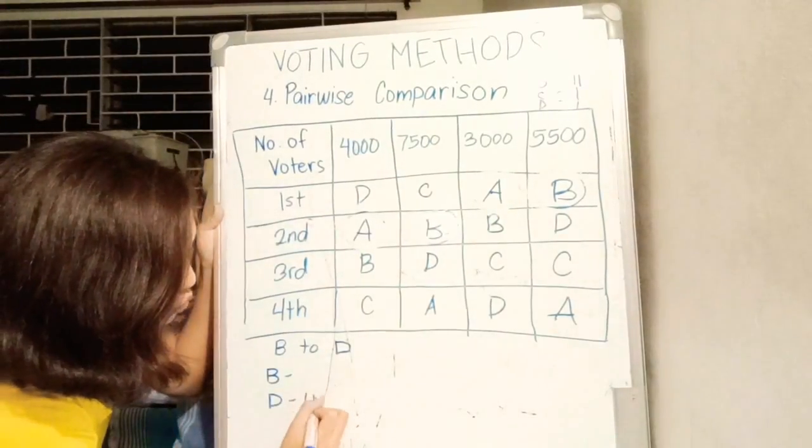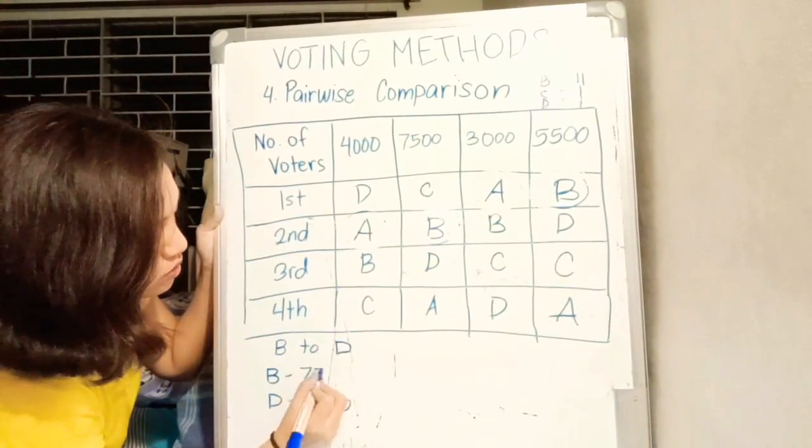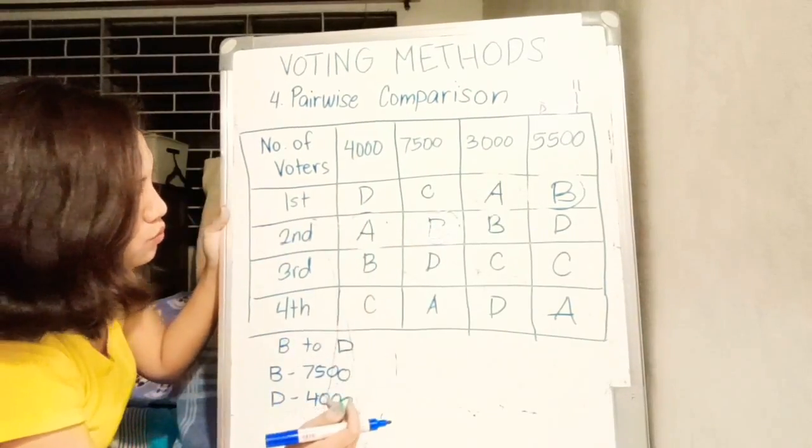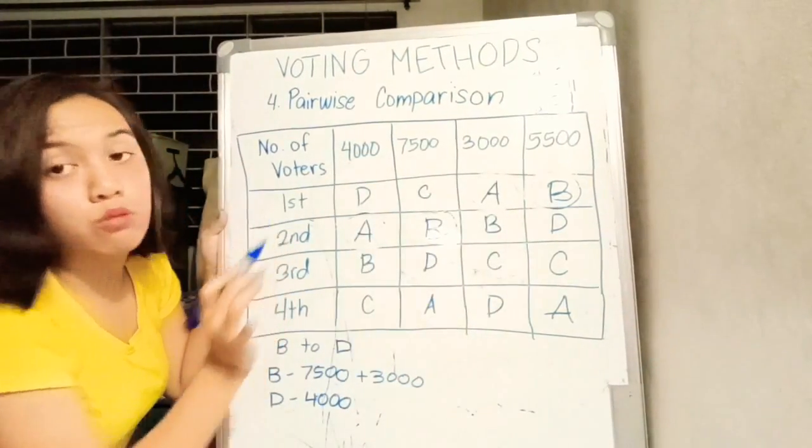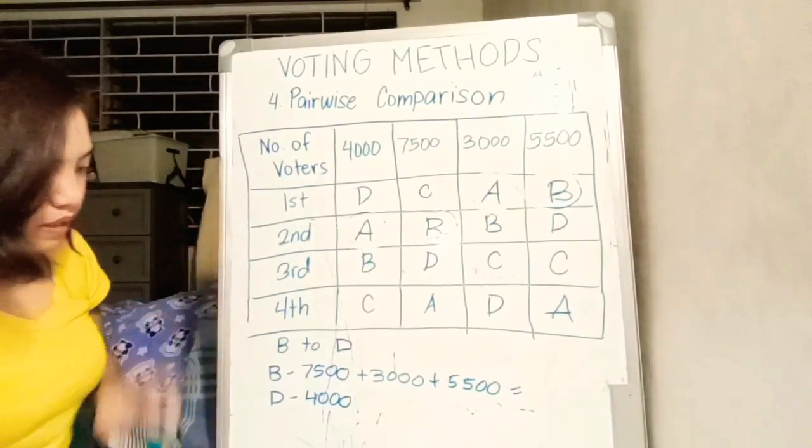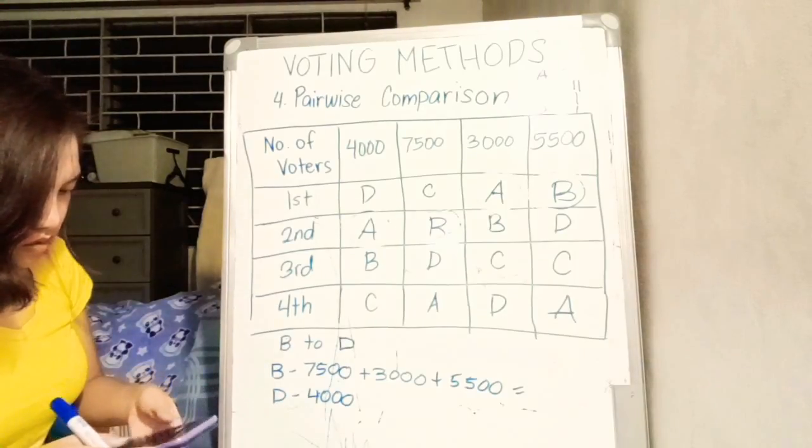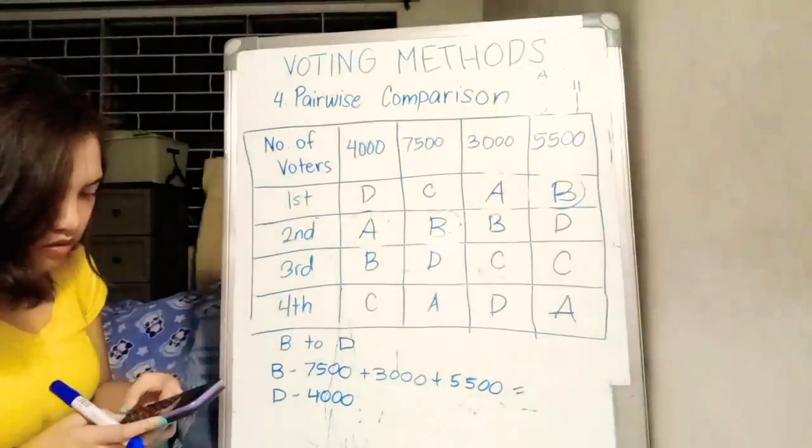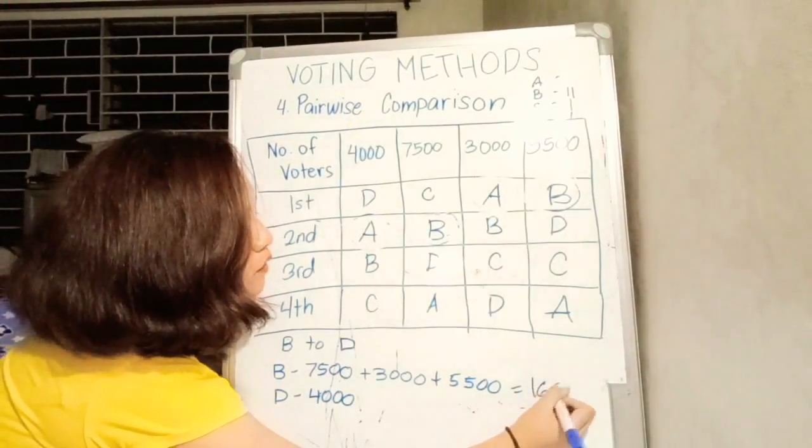Ganon na that same process. You will just check kung sino yung mas prefer ng voters between the two. For B and D, 4,000 prefer D over B, so yung 4,000 will be given to candidate D. 7,500 prefer B over D. 3,000 prefer B over D. And last, 5,500 prefer B over D. Add them all up again. 7,500 plus 3,000 plus 5,500 equals 16,000.